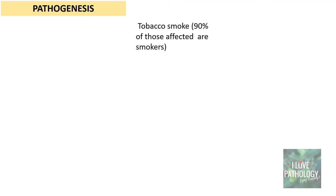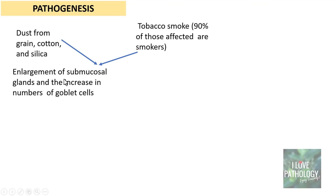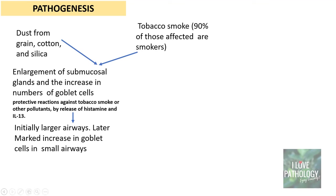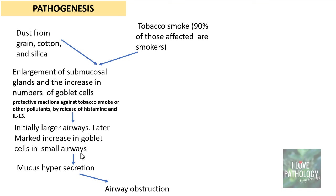Exposure to tobacco smoke or dust from grain, cotton, and silica results in enlargement of submucosal glands and an increase in the number of goblet cells. This is a protective reaction against tobacco smoke or other pollutants, mediated by the release of factors like histamine and interleukin-13. Initially the larger airways are affected, but later a marked increase in goblet cells is seen even in smaller airways, leading to mucus hypersecretion, which is the cause of airway obstruction.